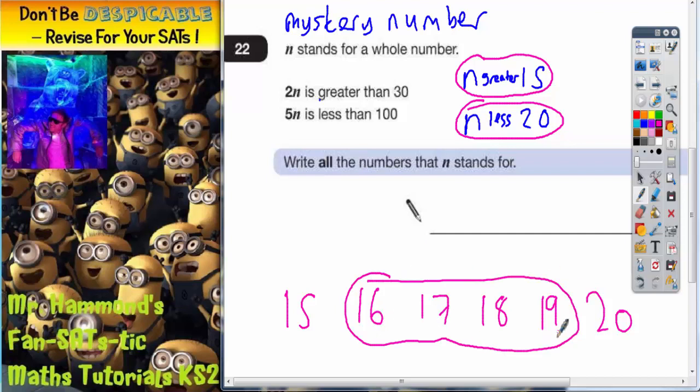16, 17, 18, 19. They're all greater than 15 but they're all less than 20, so they are the numbers I need to write on the answer space.